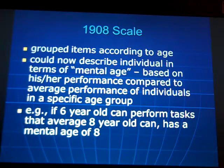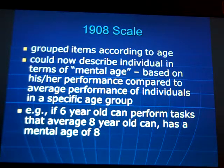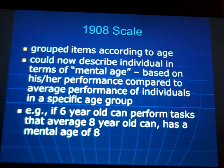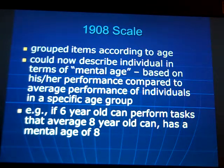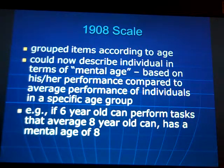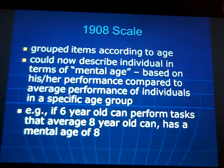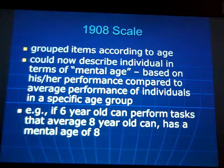The 1908 scale grouped items according to age, introducing the idea of mental age — based on performance compared to the average performance of individuals within a specific age group. For example, if a six-year-old can perform tasks that an average eight-year-old can, then his mental age would be eight — ahead of the game. If that same six-year-old could only perform tasks that an average four-year-old could, then he would be somewhat behind.